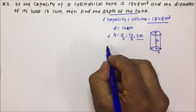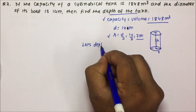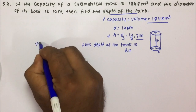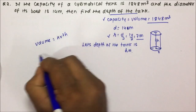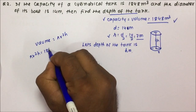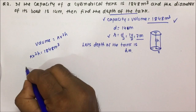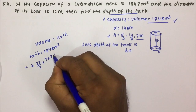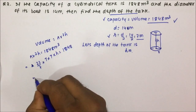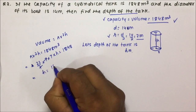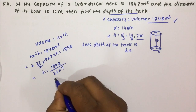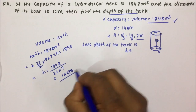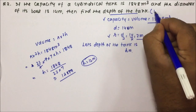Depth of the tank means they are talking about the height. Volume will be equal to pi r square h equals 1848 meter cube. Pi is 22 by 7, r is 7 — so 7 into 7 — and h we have to calculate, equals 1848. Now 7 and 7 will get cancelled, so h will be equal to 1848 divided by 22 into 7. If we divide it, it will give 12. So 12 meter will be the depth of the tank. For this question, the answer will be 12 meter, and it was a very good question.